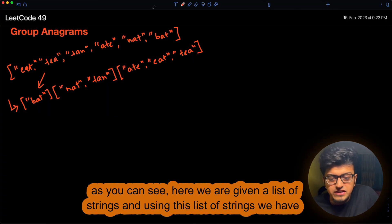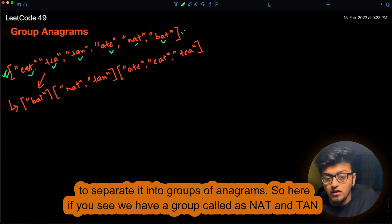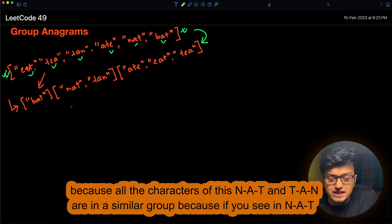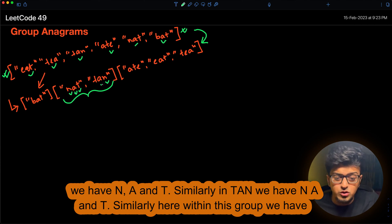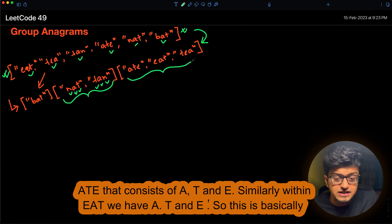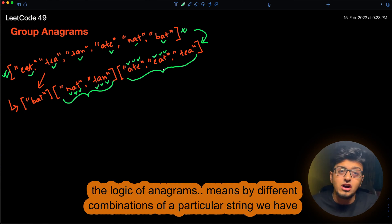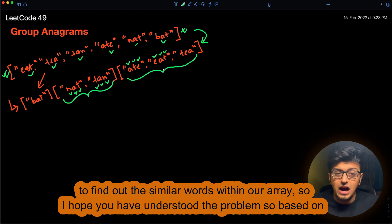As you can see, we are given a list of strings and we have to separate them into groups of anagrams. For example, 'nat' and 'tan' form one group because both contain the same characters N, A, and T. Similarly, 'eat', 'tea', and 'ate' all contain A, T, and E. This is the logic of anagrams — by different combinations of characters we find similar words within our array.